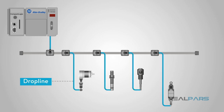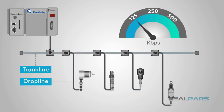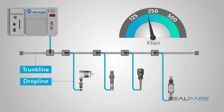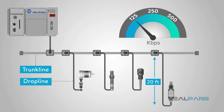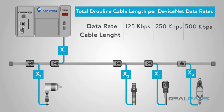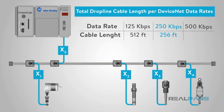The drop lines connect the devices to the trunk line, and the data rate you choose determines the total drop line length allowed. The maximum cable distance from any device to the trunk line is 20 feet. The maximum total drop length for each data rate is 512 feet at 125 kbps, 256 feet at 250 kbps, and 128 feet at 500 kbps — showing that higher data rates yield shorter distances and lower data rates allow farther-reaching capabilities.